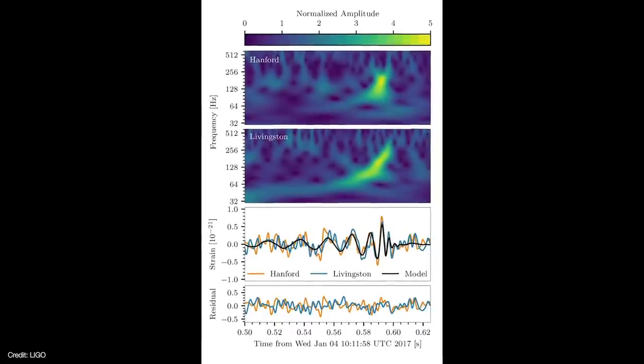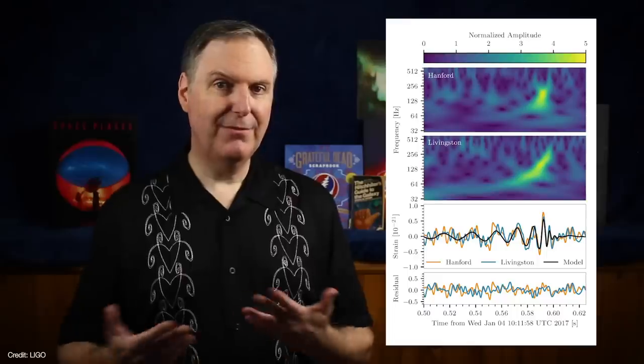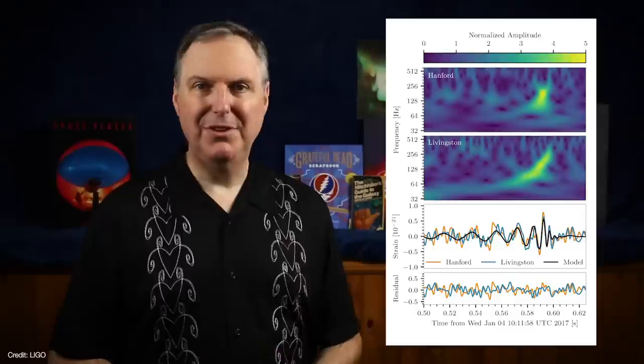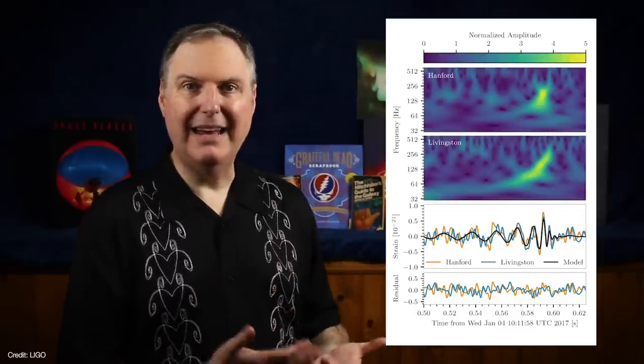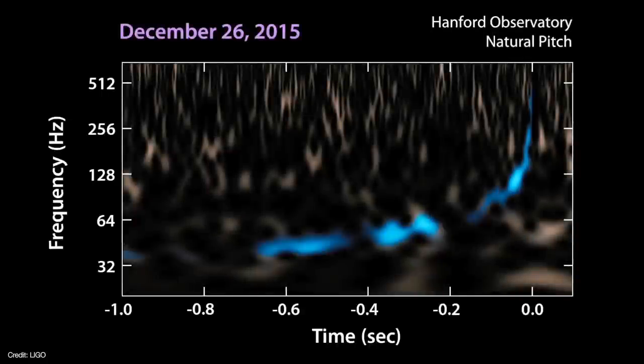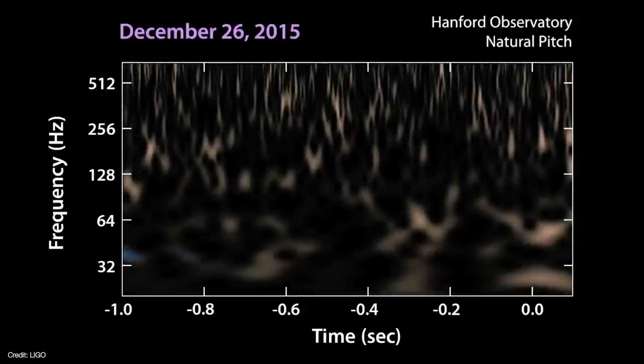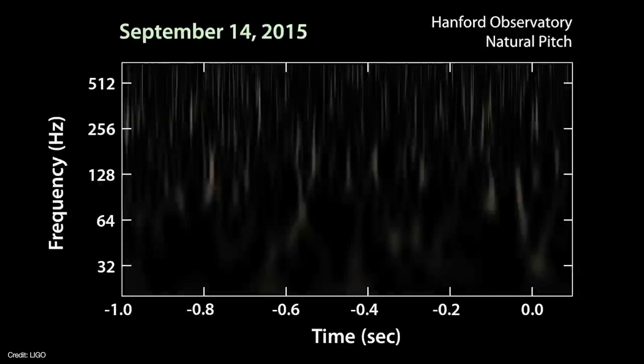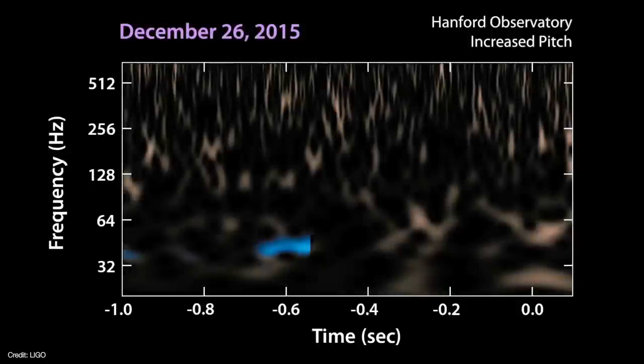Gravitational waves are detected as chirps. By coincidence, they occur at frequencies that are detectable to the human ear. Here's the first two gravitational waves played back at their natural pitch. We can make those chirps a little easier to hear by increasing their pitch.